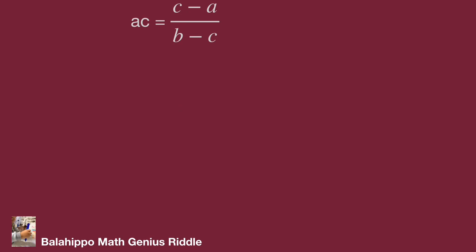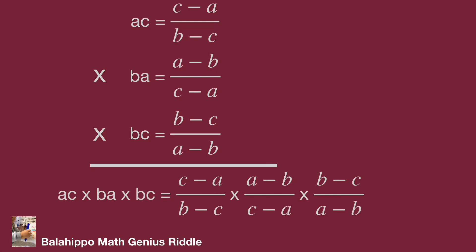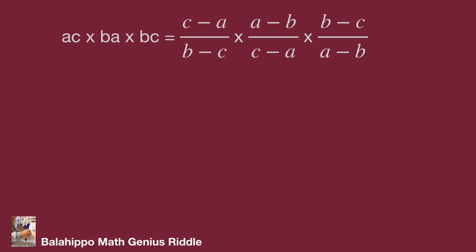We now have these three equations: A times C equals C minus A over B minus C; B times A equals A minus B over C minus A; and B times C equals B minus C over A minus B. We have A, B, C on the left side of each equation. To generate A times B times C, multiply these three equations together. The result is A times C, times B times A, times B times C, equal to the product of the three right-hand sides. Eliminate the same items on the right side of the equations and simplify.